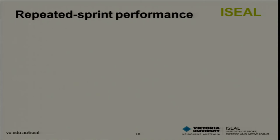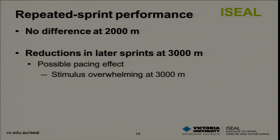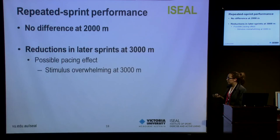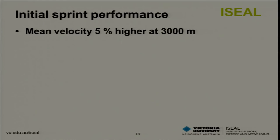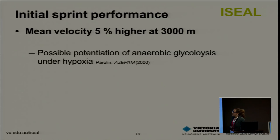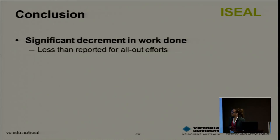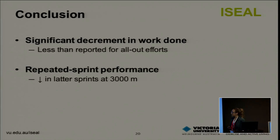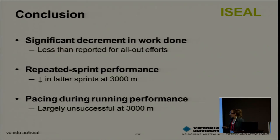We observed no differences in repeated sprint performance at 2,000 metres; however, there were reductions in later sprints at 3,000 metres. It is possible that participants paced themselves at both altitudes — largely successful at 2,000 metres — but the hypoxic stimulus may have been overwhelming at 3,000 metres. Mean velocity was 5% higher during initial sprint performance at 3,000 metres, possibly attributed to a potentiation effect of anaerobic glycolysis present under hypoxia. In conclusion, we observed a decrement in work done less than reported for all-out efforts, and repeated sprint performance was affected in later sprint bouts at 3,000 metres but not at 2,000 metres.